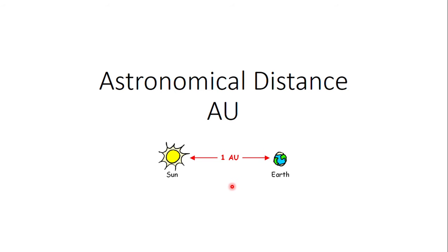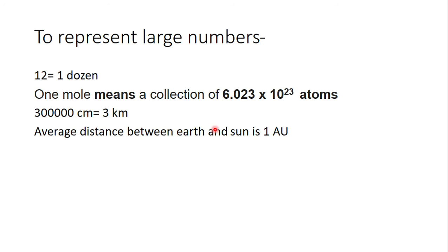We know that the distances are very huge when you talk about celestial objects like planets and so on. So, in order to handle huge numbers and have convenience, we use a simplified unit called Astronomical Unit.